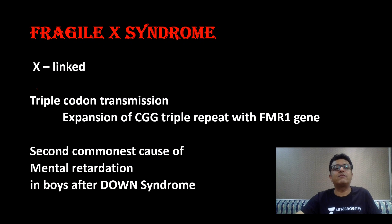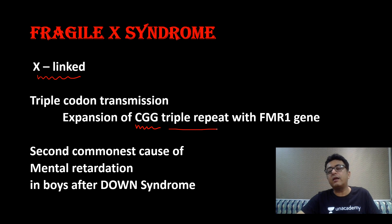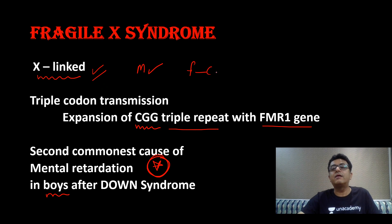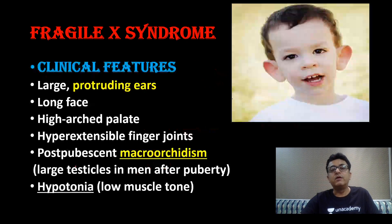Now come to Fragile X syndrome. They show X-linked inheritance. There is a CGG triple codon repeat — you have covered this in biochemistry in detail. The CGG sequence repeat occurs at the FMR1 gene. It is the second commonest cause of mental retardation after Down syndrome in boys. Why in boys? Because it is an X-linked disease that occurs mainly in males — females are carriers.